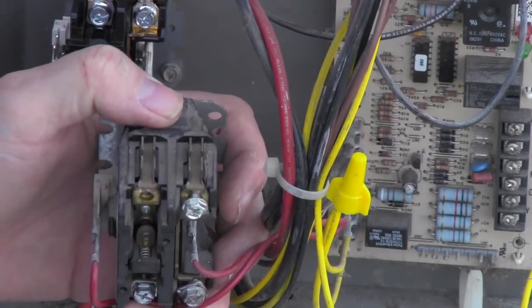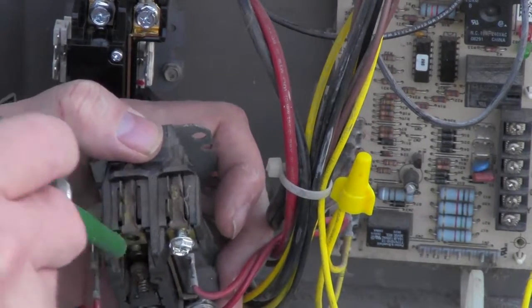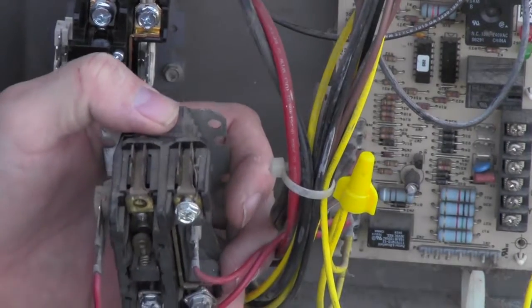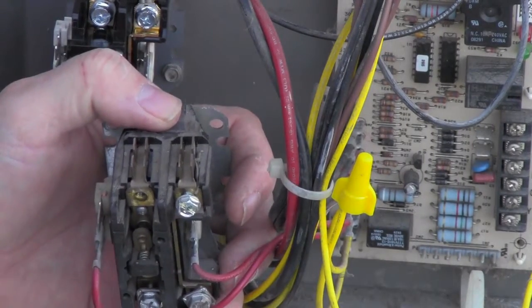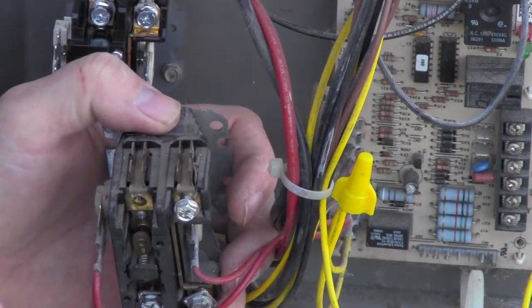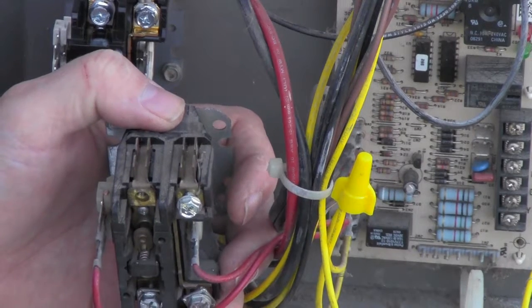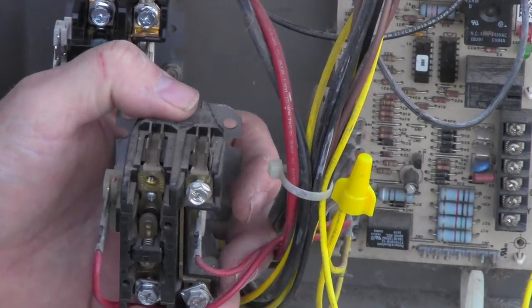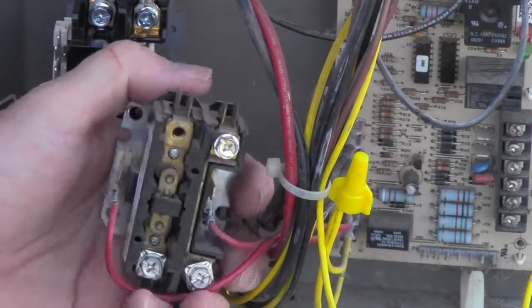The problem with this contactor is right in here is your points. I know that's hard to see, but right in there is your points. And what happens is when you get debris and stuff in there, it won't close tightly so it will start to arc a little bit. Once that happens, then your contactors start to pit, and then it's time to go ahead and replace that contactor when that happens.